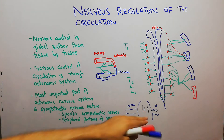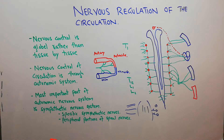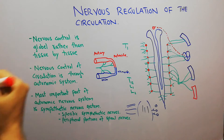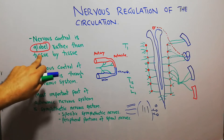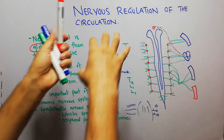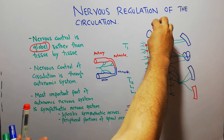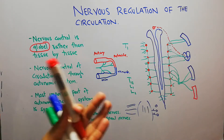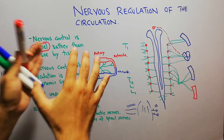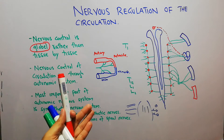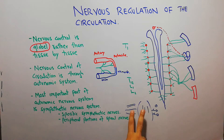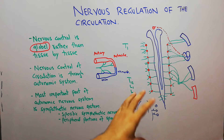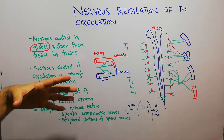In contrast to local and humoral control of blood flow, the nervous control is a global phenomenon rather than tissue by tissue. When the brain, spinal cord, or nerves play their role in the regulation of circulation, they act globally throughout the human body — they are not acting tissue by tissue, but rather increasing or decreasing the blood supply globally.